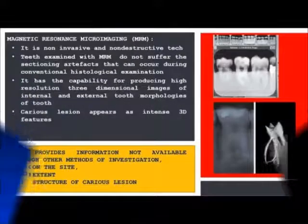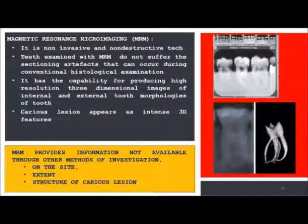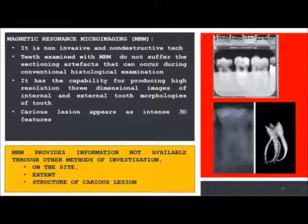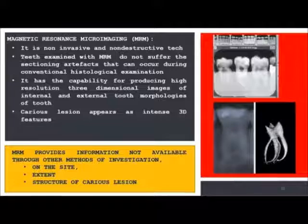Magnetic Resonance Microimaging, or MRM, is a non-invasive and non-destructive technique in which teeth examined with MRM do not suffer the sectioning artifact that can occur during conventional histological examination. It has the capability of producing high-resolution three-dimensional images of the internal and external tooth morphologies. Carious lesions appear as intense threaded features, and MRM provides information on the site, extent, and structure of carious lesions not available through other methods of investigation.